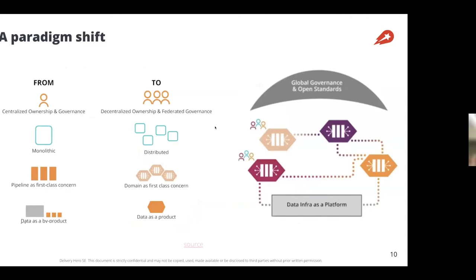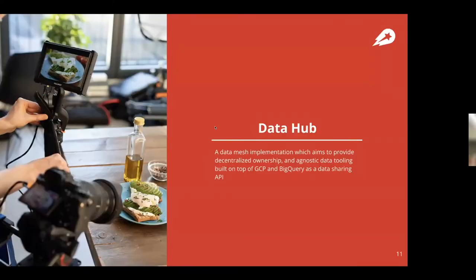The three pillars of the data mesh: first, moving from centralized to decentralized ownership where every team owns their domain and dataset. Second, having the domain as a first-class concern — you think about how the team operates within the domain, not just the pipeline. Third, since a domain indicates a problem or need, data is the product that delivers solutions within that domain.